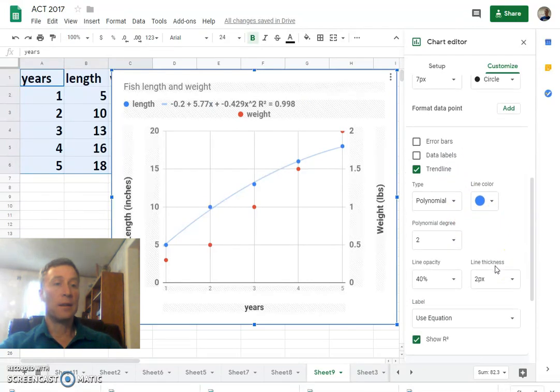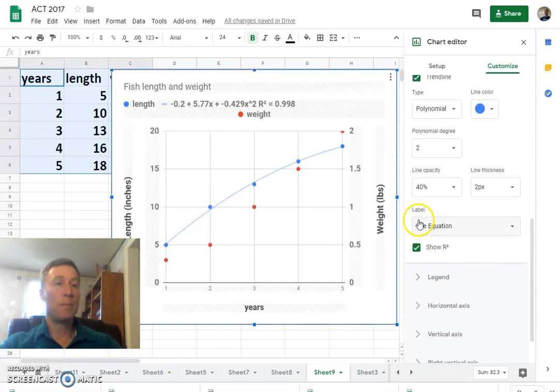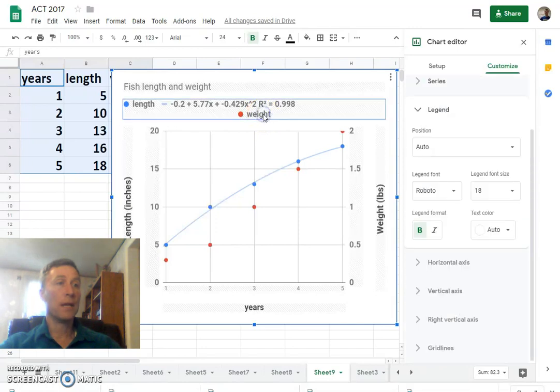And here where it says label, we're going to use the equation. We'll use the equation so we can see what the equation is, and then we can use that to predict points in the future. Let's do the same thing for weight.